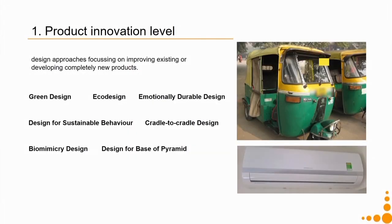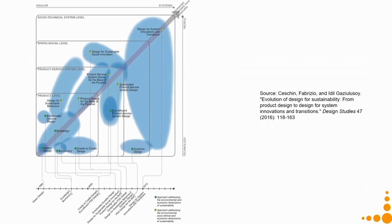There are various approaches within the product innovation level: green design, eco design, emotionally durable design, design for sustainable behaviour, cradle to cradle design, biomimicry design, and design for base of the pyramid. These are placed on a chart that maps the four levels and their sub-approaches on a timeline. Let us discuss each approach and then return to this chart.